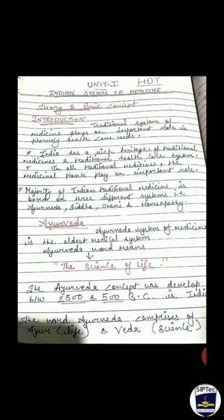Indian traditional medicine is based on different systems, which include Ayurveda, Siddha, Yunani, Yoga and Naturopathy, and Homeopathy. Apart from these systems, there are a large number of healers which have not been placed in any category. The majority of Indian traditional medicine is based on three different systems: Ayurveda, Siddha, Yunani, and Homeopathy.